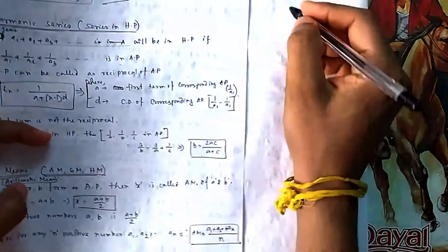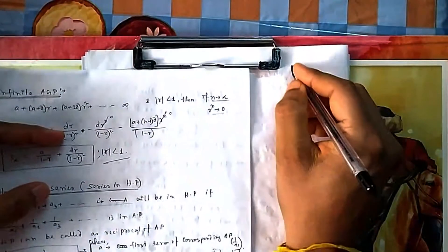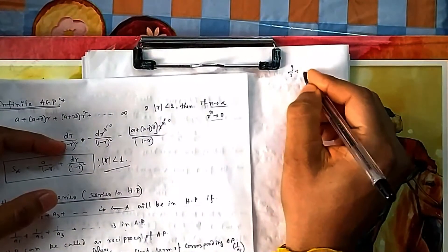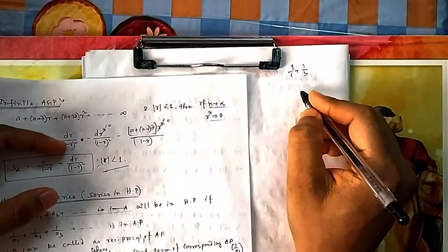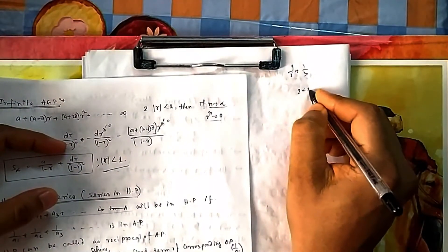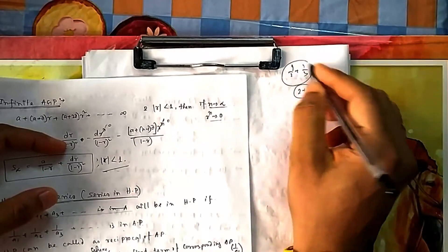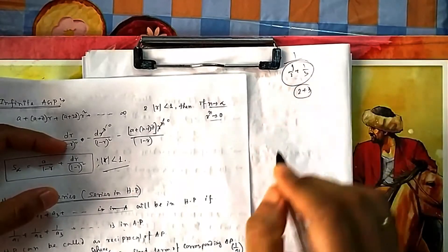For example, 1/2 + 1/3 — you cannot say that taking the reciprocal gives 2 + 3. So the reciprocal of a sum is not possible; there is no sum formula for HP.